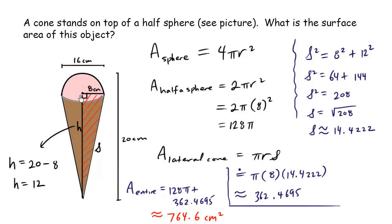The key here is to recognize the two different composite parts: the half sphere and the cone. Make sure you have the correct area formula, and that the radius is half the diameter. When determining the height for the Pythagorean theorem, remember the height is not simply 20 — it's 20 minus the radius. Be careful with your arithmetic and don't forget to add the two parts together. If you made it all the way to the end without a mistake, you truly deserve some ice cream.